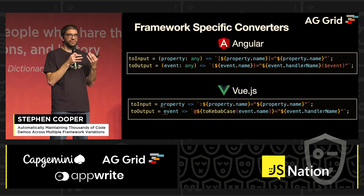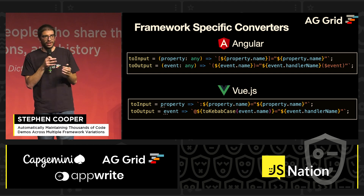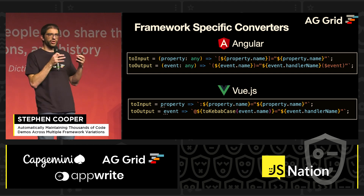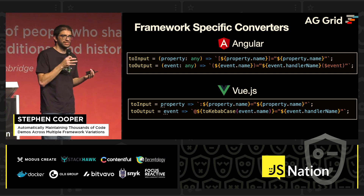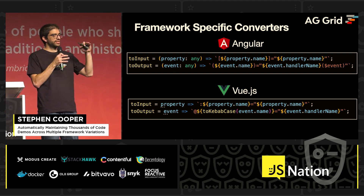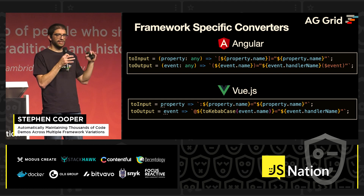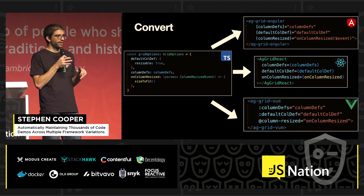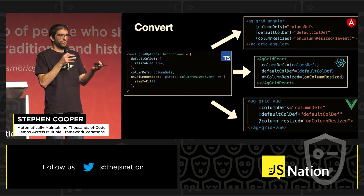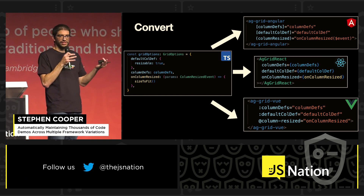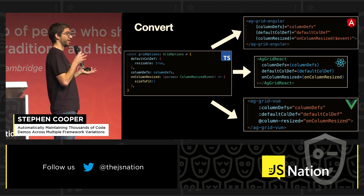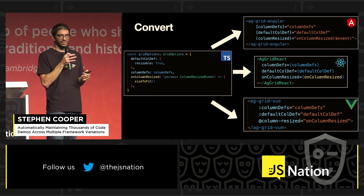We then use framework-specific converters. Here you can see Angular and Vue using different syntax to achieve similar things. We apply these framework-specific converters against each category, and once done we output the code into a base template — giving us Angular, React, and Vue examples, having only written the TypeScript one plus the converters.